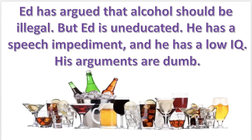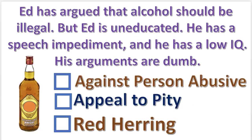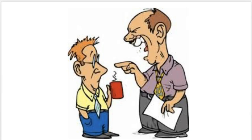Next practice problem. What fallacy is committed in this argument? Press pause — the answer will appear in 3, 2, 1. The argument against the person, abusive. The arguer attempts to discredit Ed's argument by verbally abusing him.